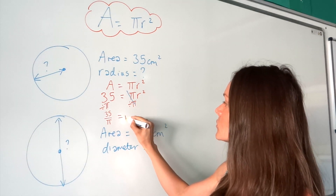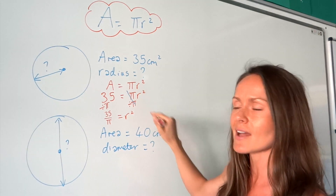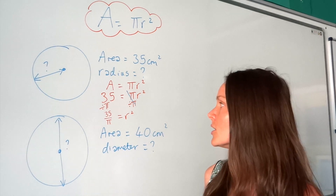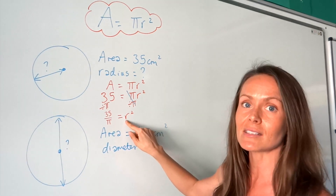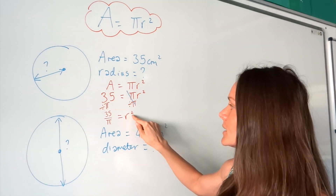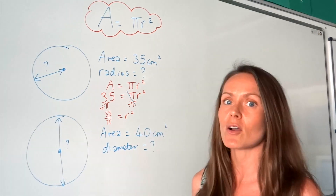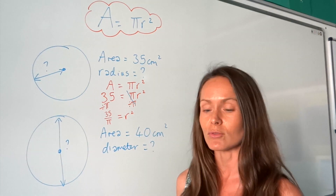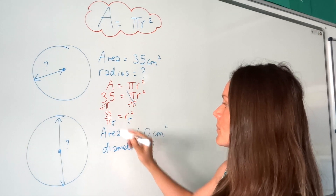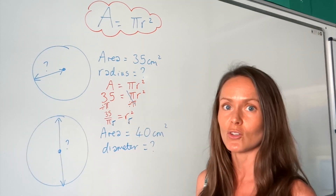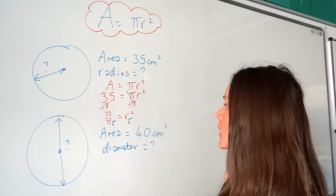So that is equal to r squared, because that's what was left on the right-hand side. We haven't quite finished, because we're trying to find the radius r — this isn't the radius, this is the radius squared. So we need to get rid of the squared symbol on the r. The opposite of squaring is to square root, so I'm going to square root both sides, because you need to keep the equation balanced and do the same thing on both sides.